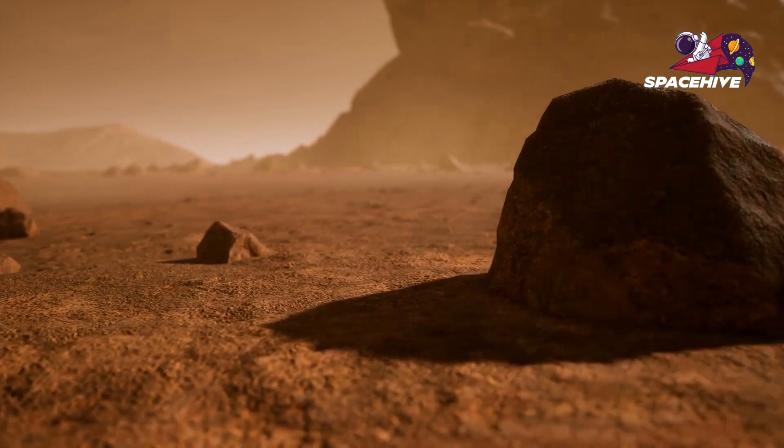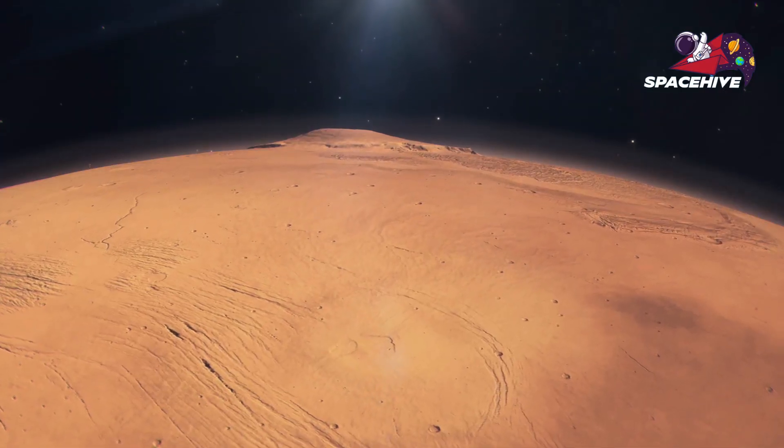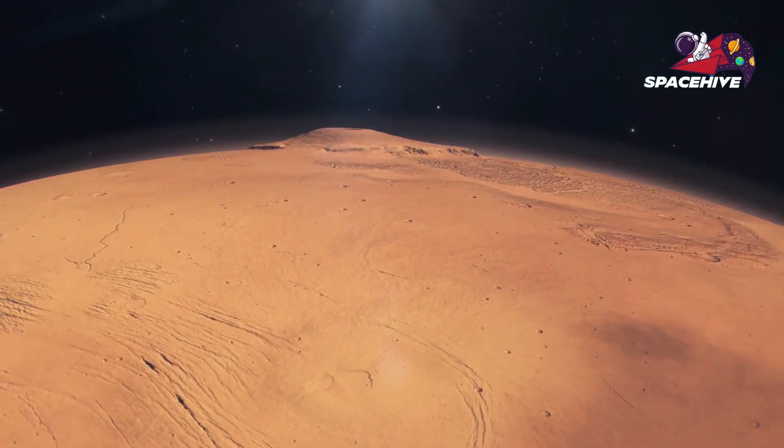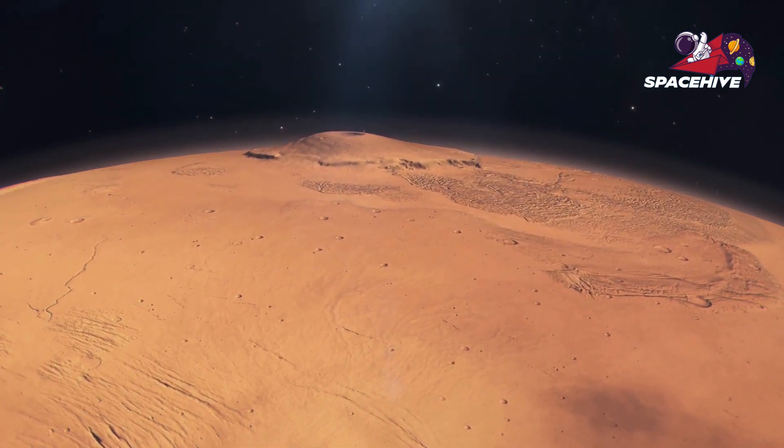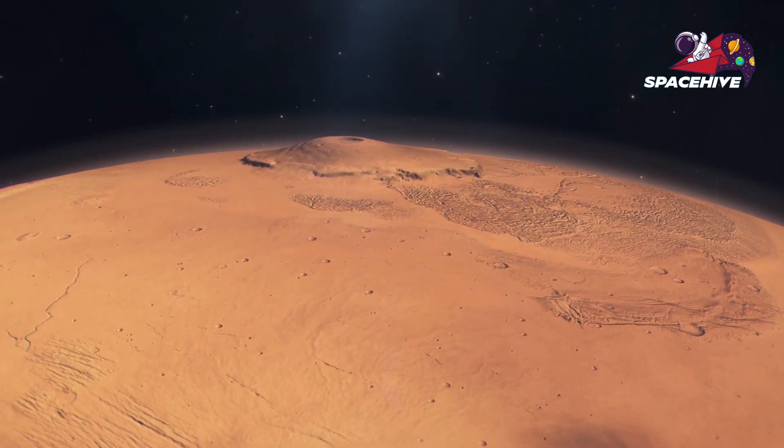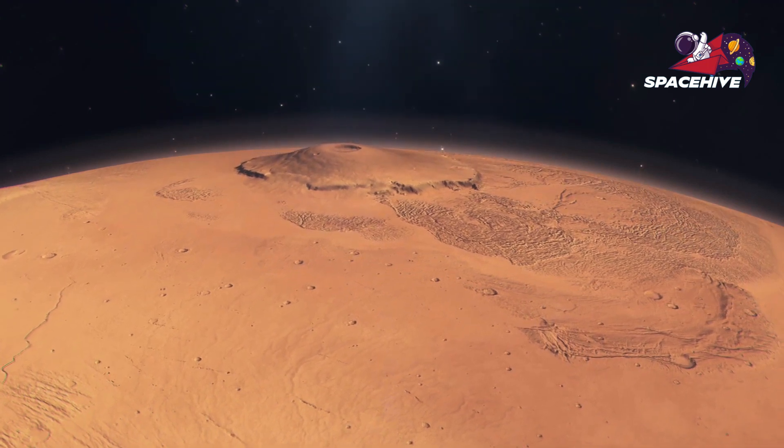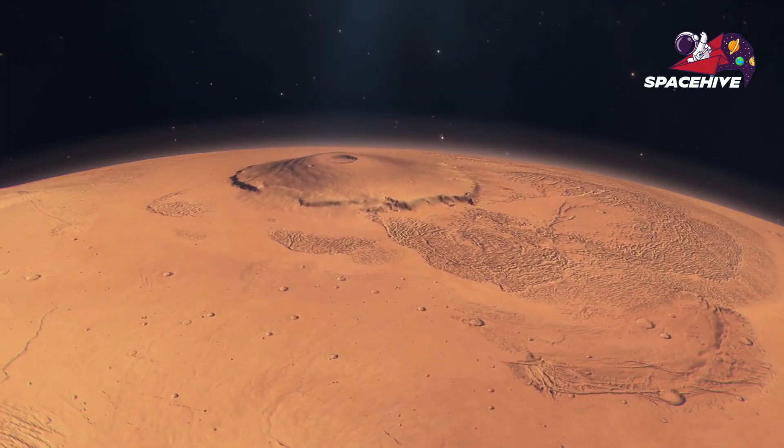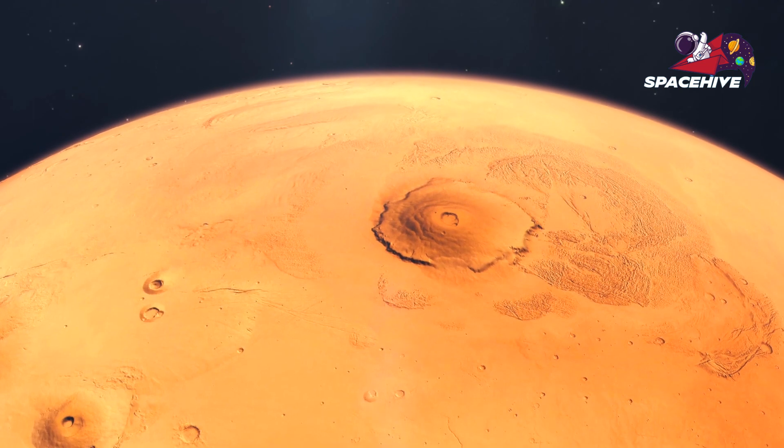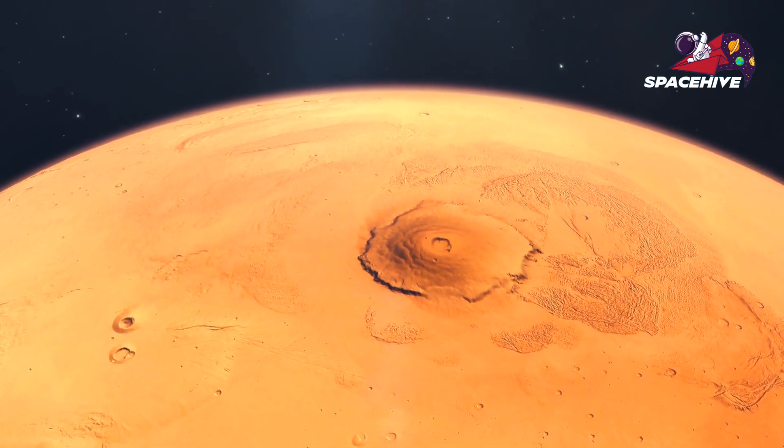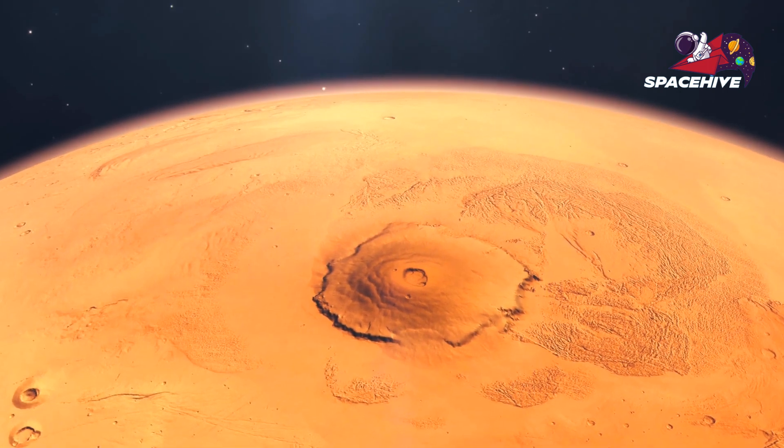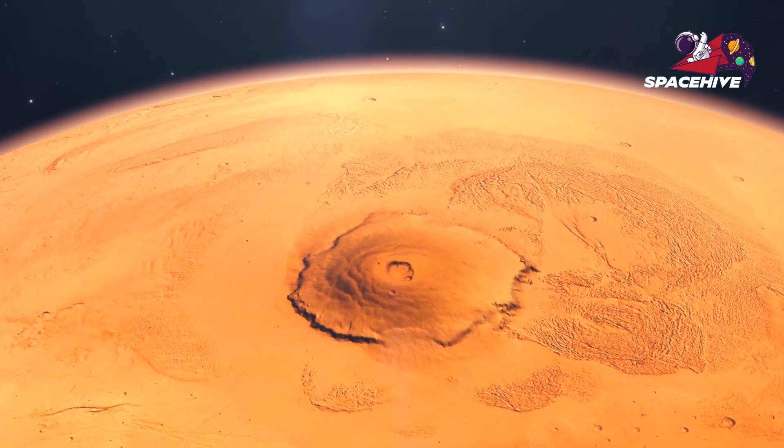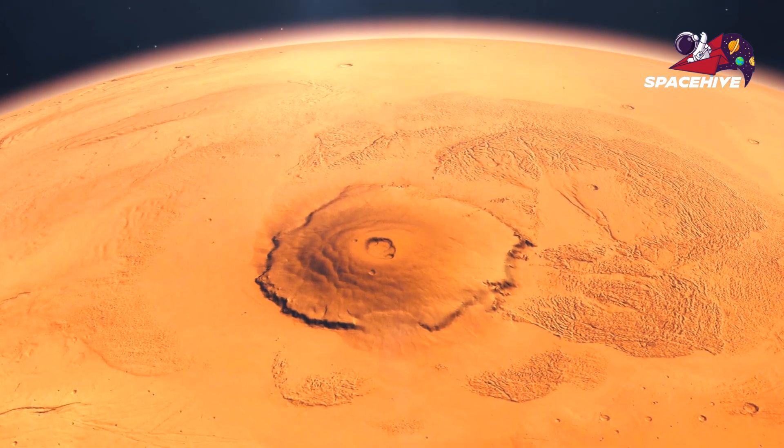One of the reasons Olympus Mons is so giant is that Mars does not have tectonic plates like Earth does. This means that instead of numerous smaller volcanoes forming over time, magma is able to build up in one spot, creating a single, giant volcano. Interestingly, Olympus Mons is also relatively young. It is estimated to be only about 100 million years old, which is pretty recent in geological terms.